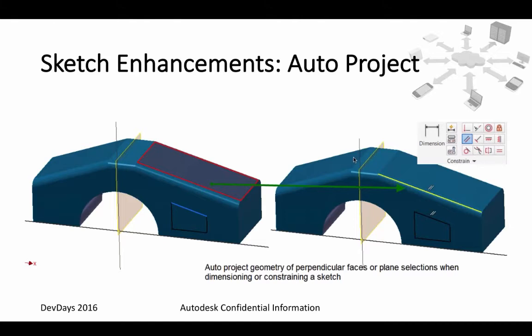Another thing is auto projection. When you're inside your sketch and you want to set up constraints between the sketch geometry and geometry outside it, those geometries outside the sketch will be automatically projected into your sketch.